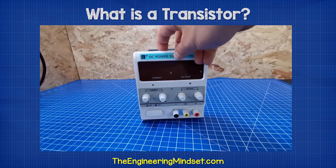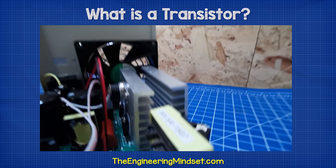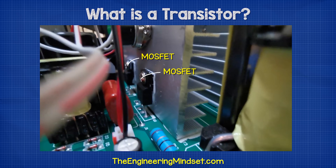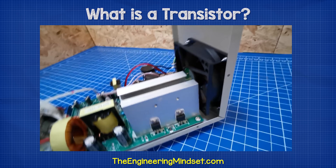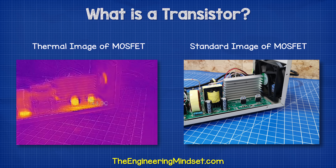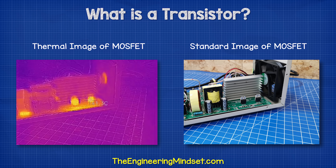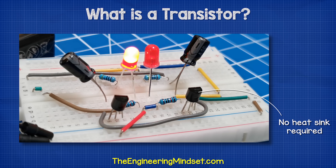For example, inside this DC bench power supply, we have some MOSFET transistors which are attached to very large heat sinks. Without the heat sink, the components quickly reach 45 degrees Celsius or 113 degrees Fahrenheit with a current of just 1.2 amps, and they will become much hotter as the current increases. But for electronic circuits with small currents, we can just use resin body transistors which do not require a heat sink.